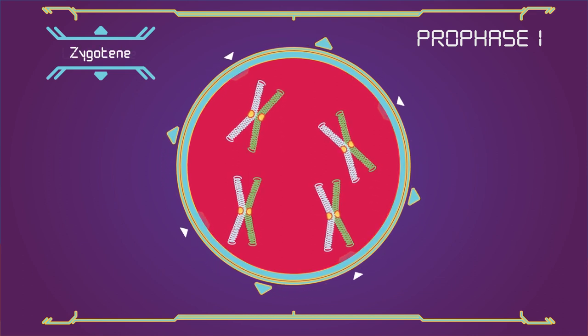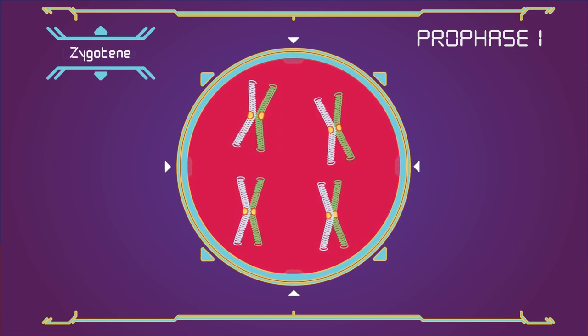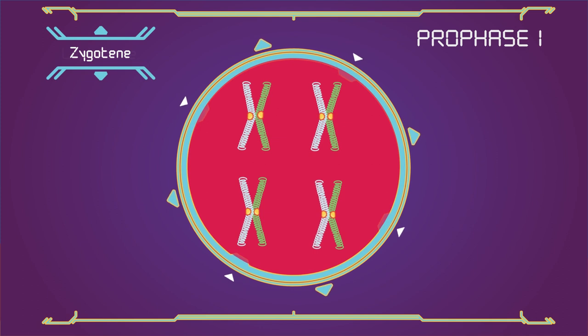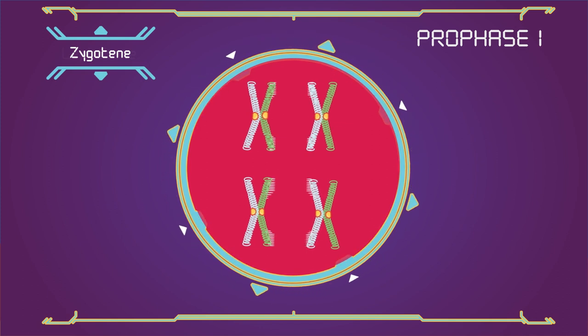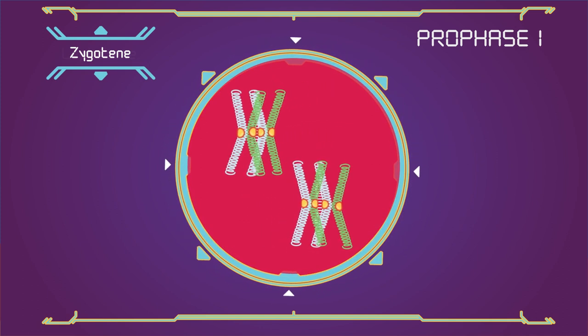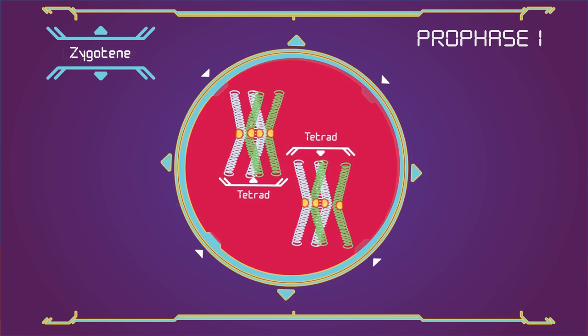Zygotene: Chromosomes approximately line up with each other into homologous chromosome pairs through the synaptonimal complex. The paired chromosomes are called bivalent or tetrad chromosomes.